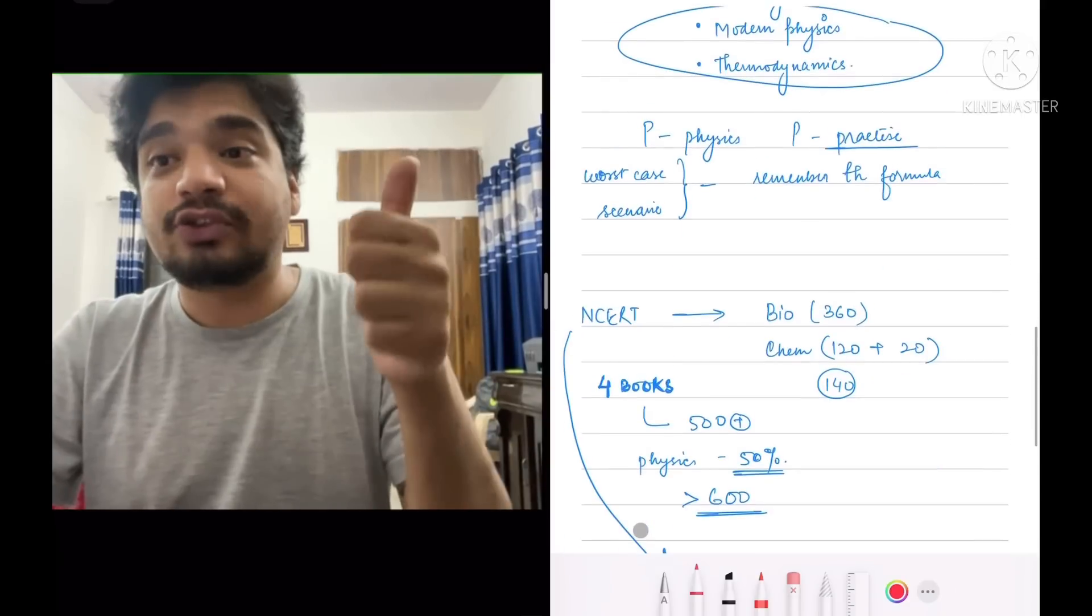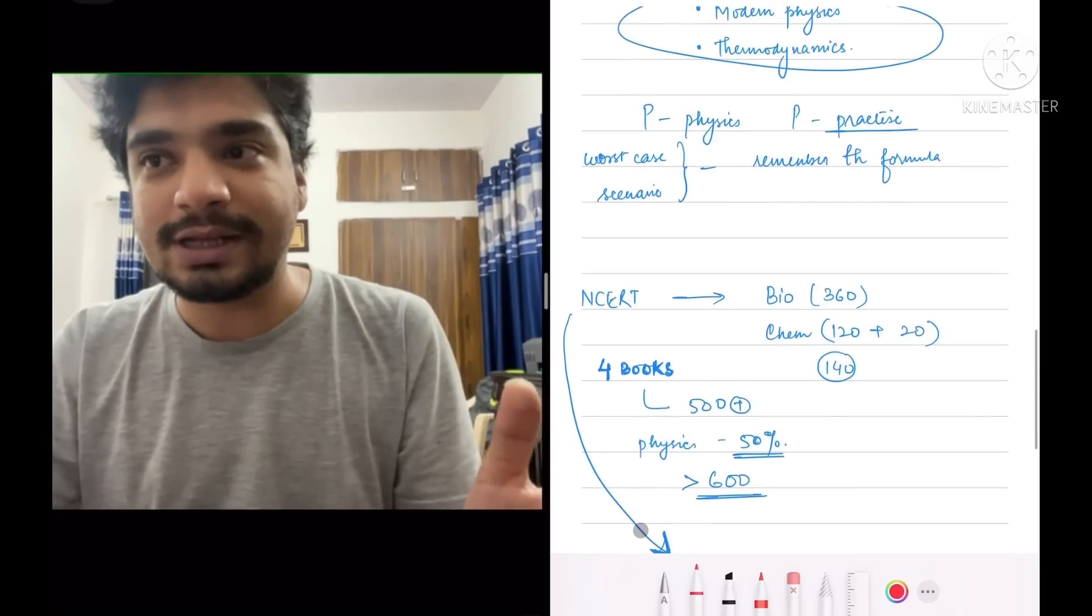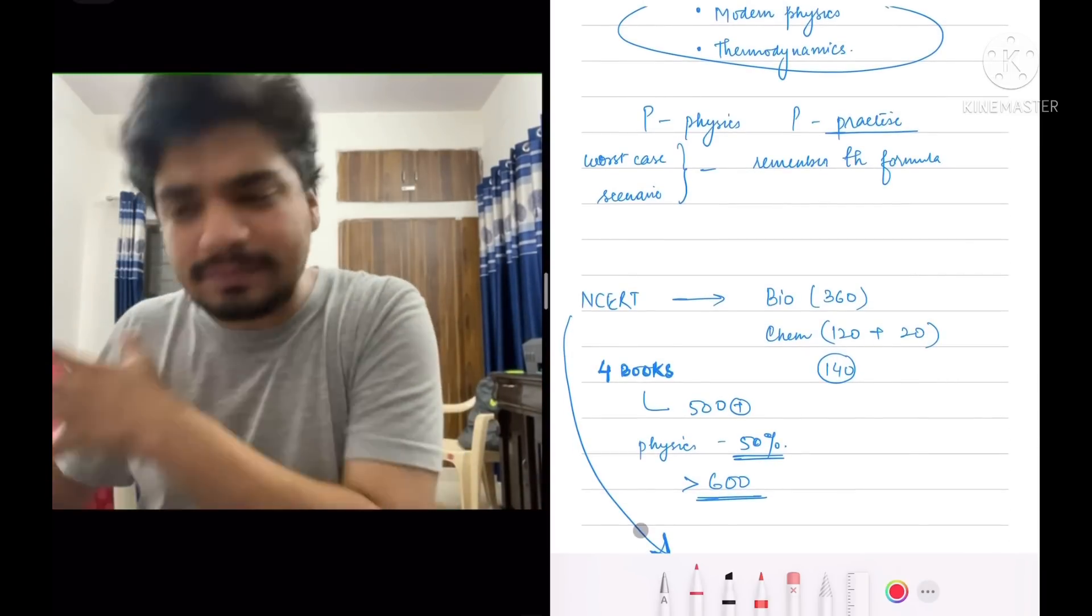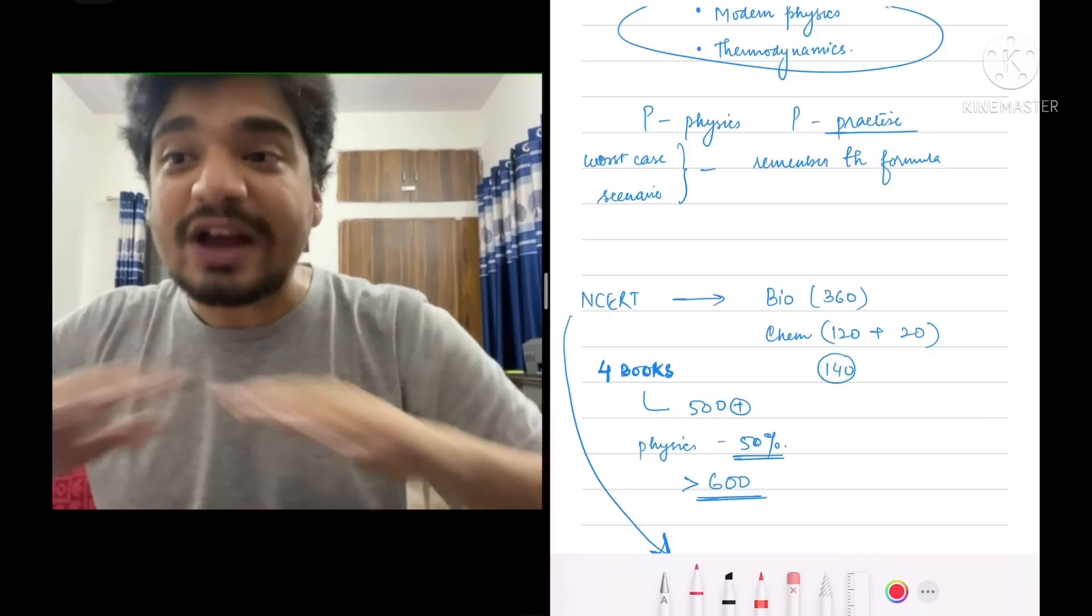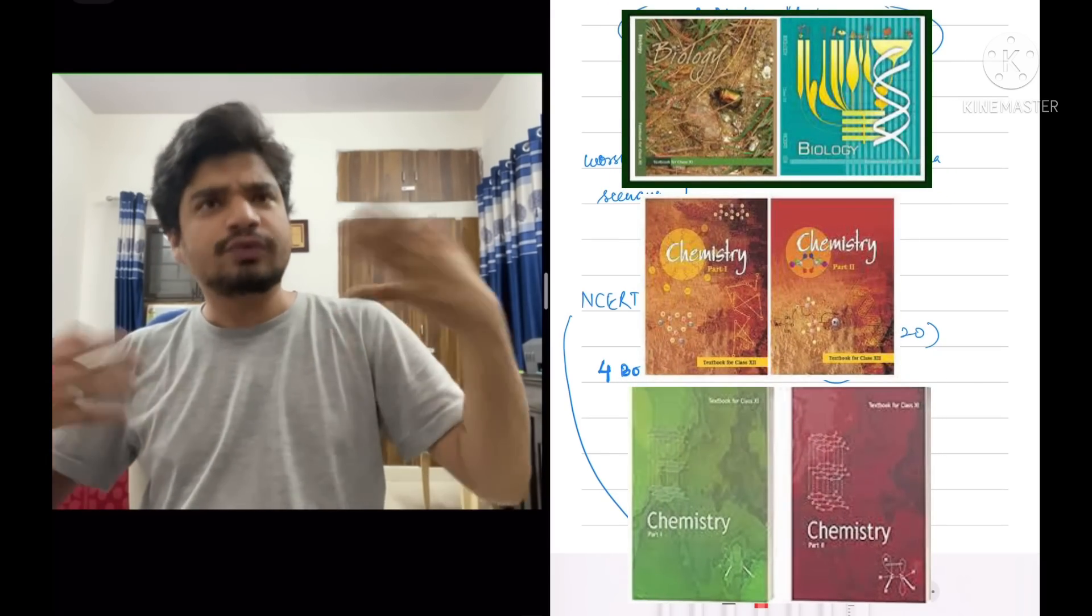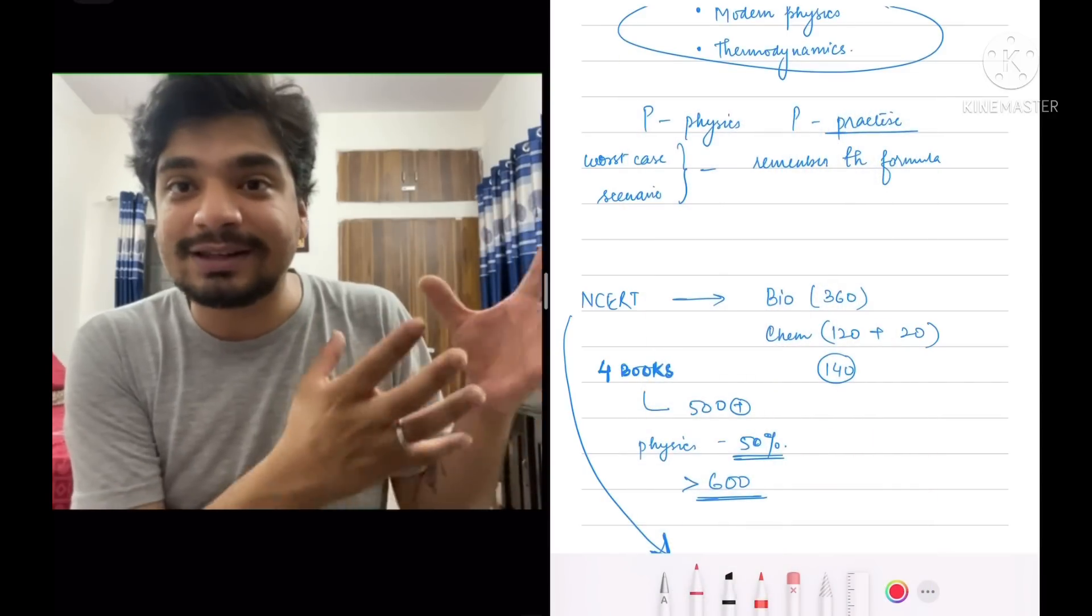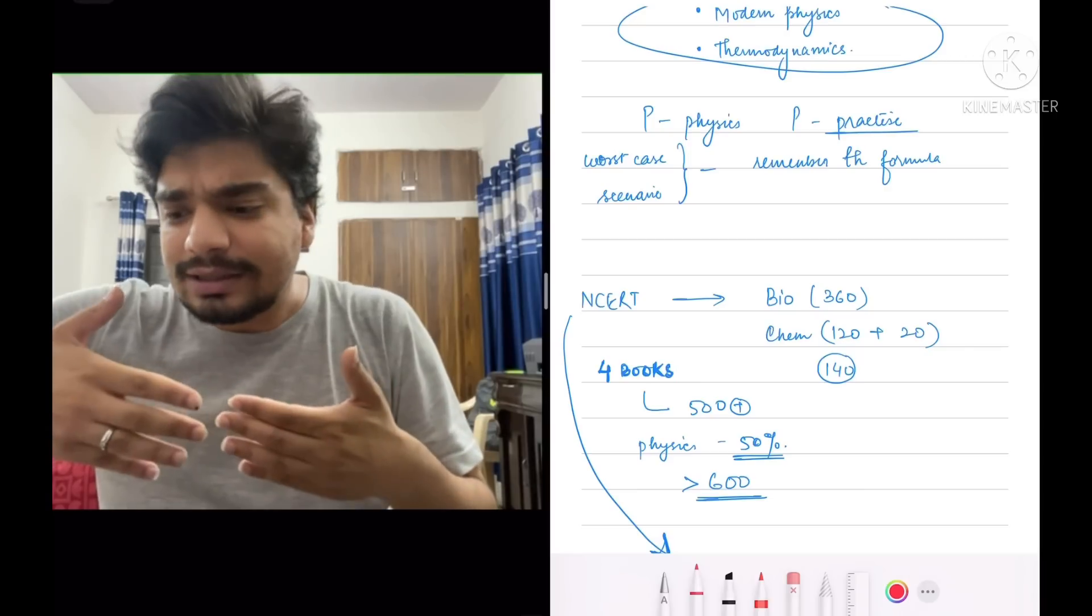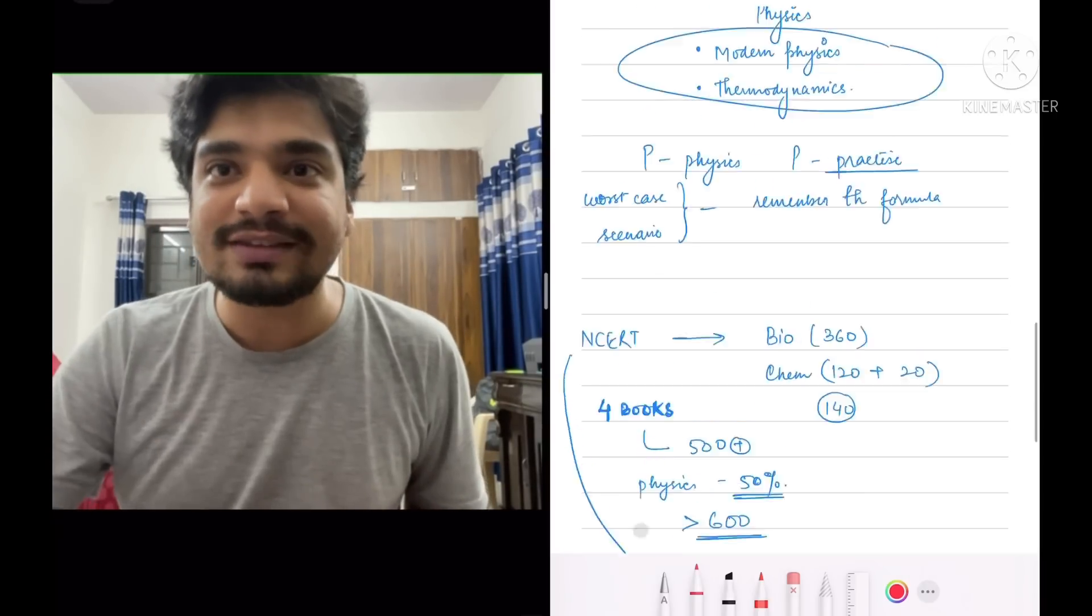So if your bio is strong, 360 marks, if your chemistry strong, just by focusing on NCERT 120 marks and getting your physics related intermingled concepts of physical chemistry, 20 marks. You can secure 500 marks just from four books. Okay, not four, maybe six books, but yeah. Just from NCERT, just from those thousand pages of NCERT, 1100 pages that you have to do in two years. It doesn't seem that tough, right? Getting 500 plus just by focusing on NCERT.